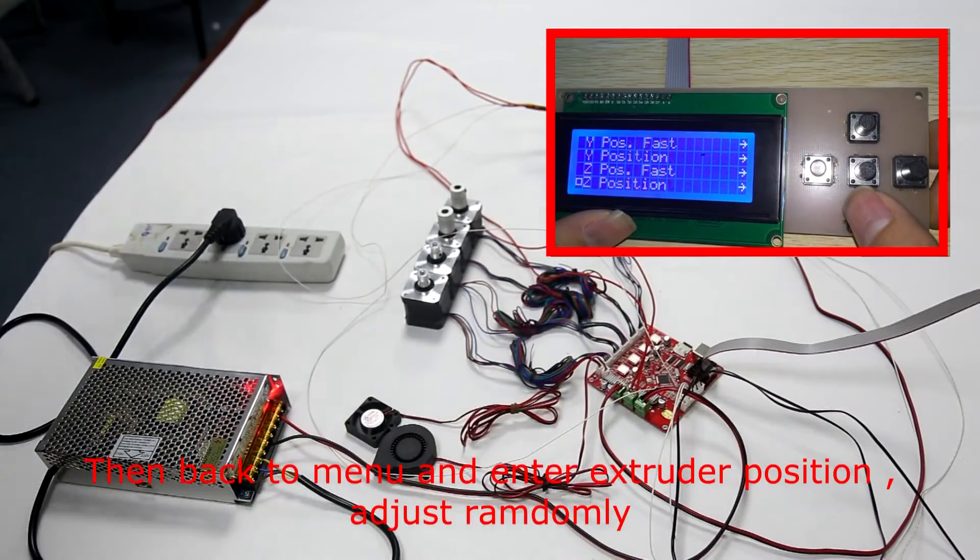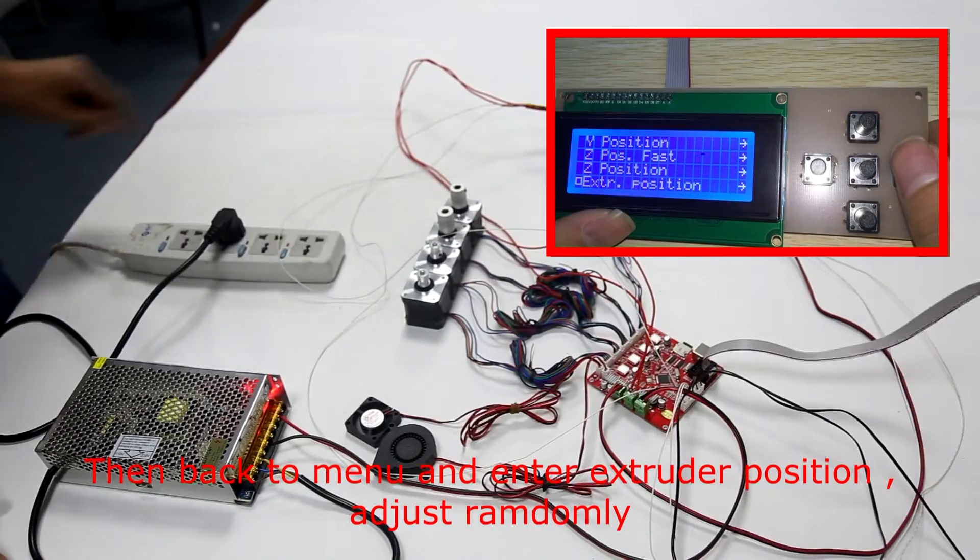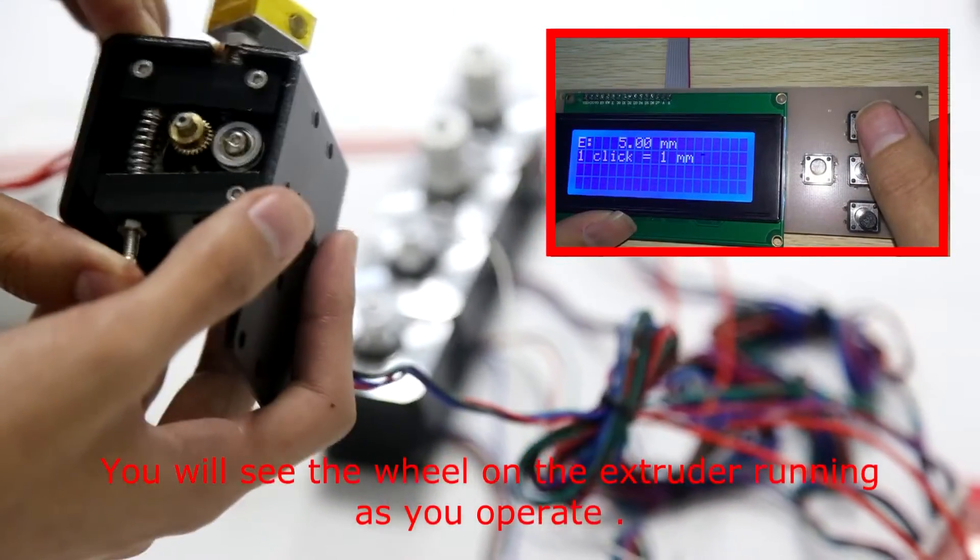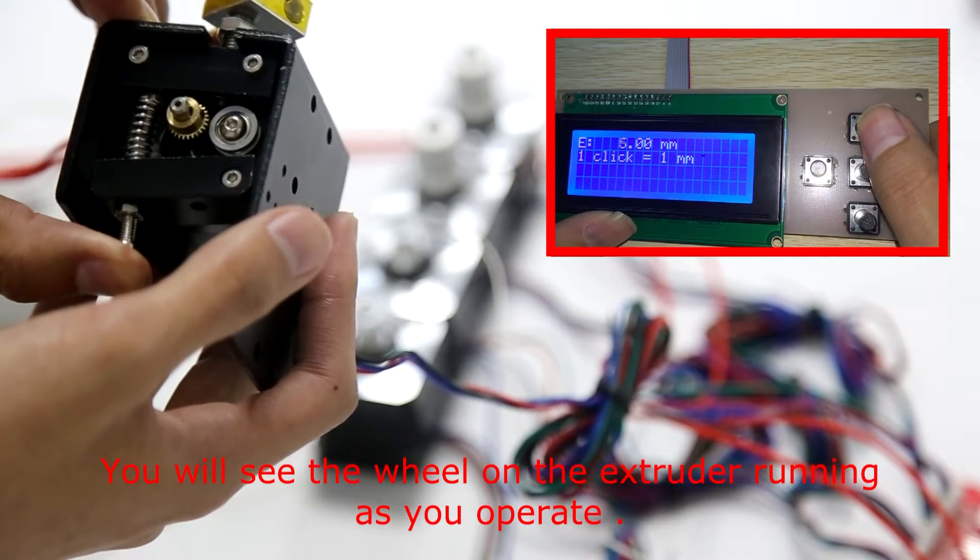Then back to menu and enter extruder position, adjust randomly. You will see the wheel on the extruder running as you operate.